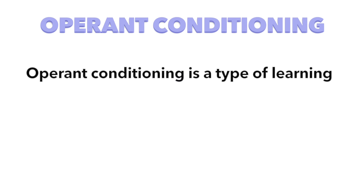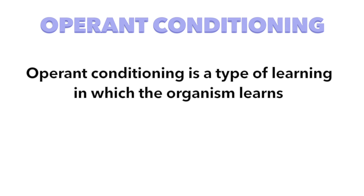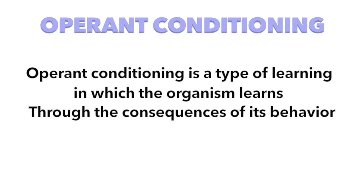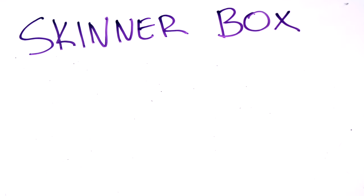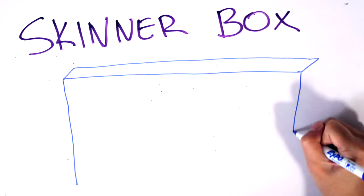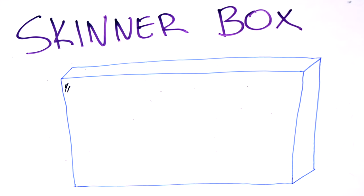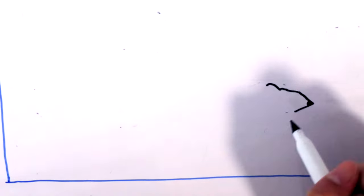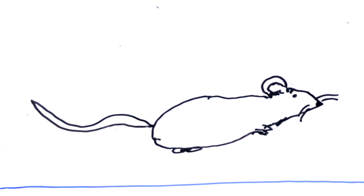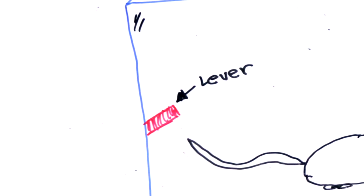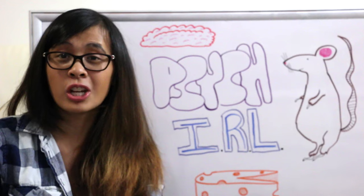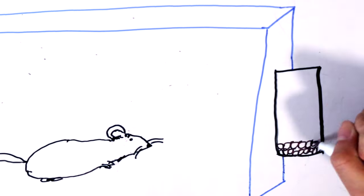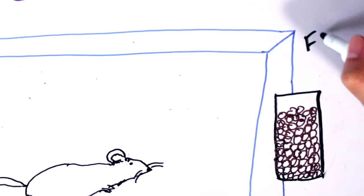Operant conditioning is a type of learning in which the organism learns through the consequences of its behavior. B.F. Skinner made a device called the Skinner Box, which was used to teach animals and modify their behavior. Skinner put a rat in this box. The box has a lever, a bowl, and a closed chamber. If you pull the lever, the chamber opens and it dispenses food.